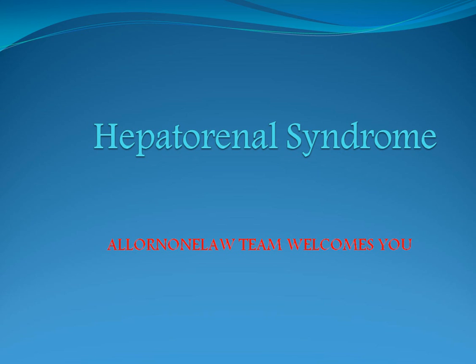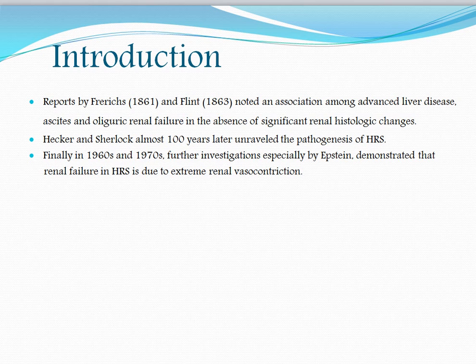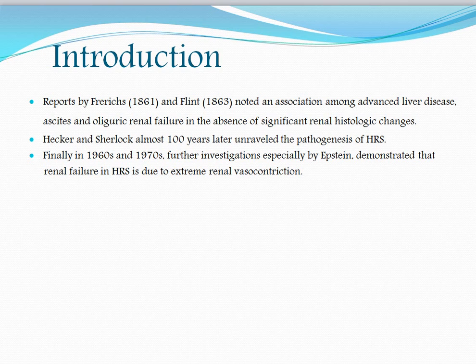Let's begin with the introduction. Reports by Fredericks in 1861 and Flint in 1863 noted an association among advanced liver disease, ascites, and oliguric renal failure in the absence of significant renal histologic changes. About a hundred years later, Hecker and Sherlock — from Sherlock's famous textbook — unraveled the pathogenesis of HRS.